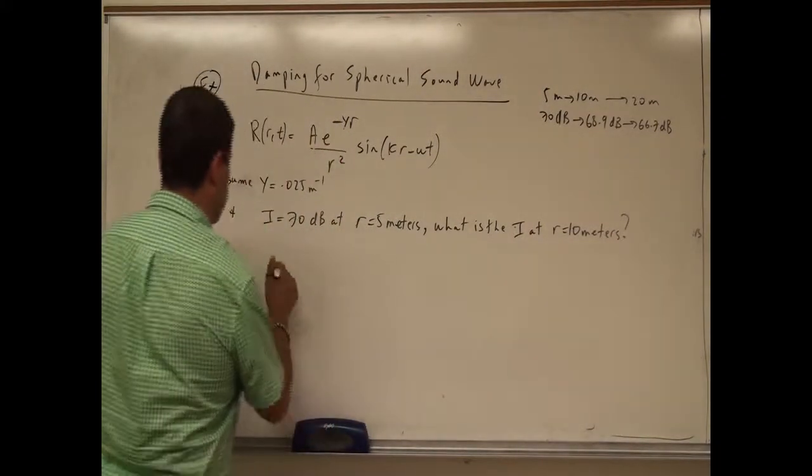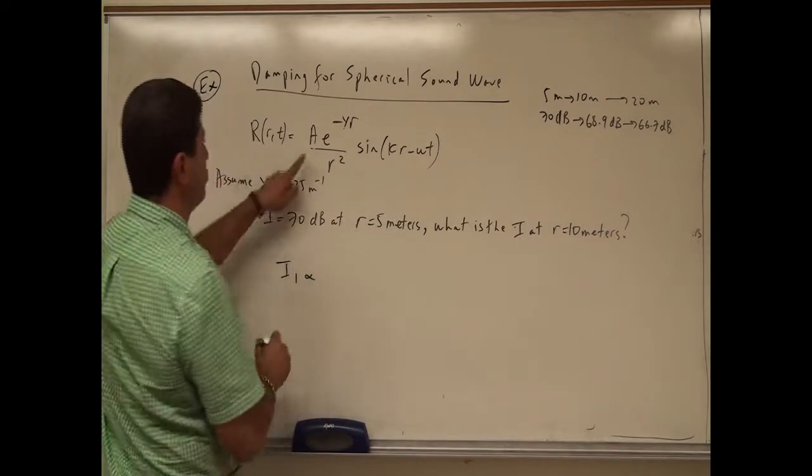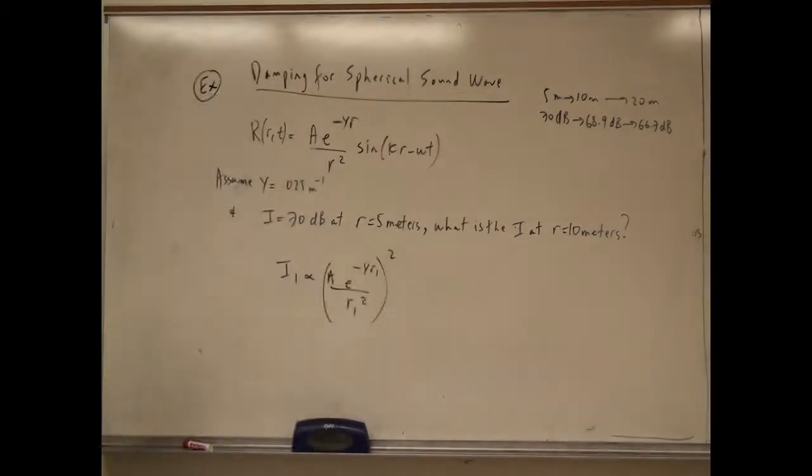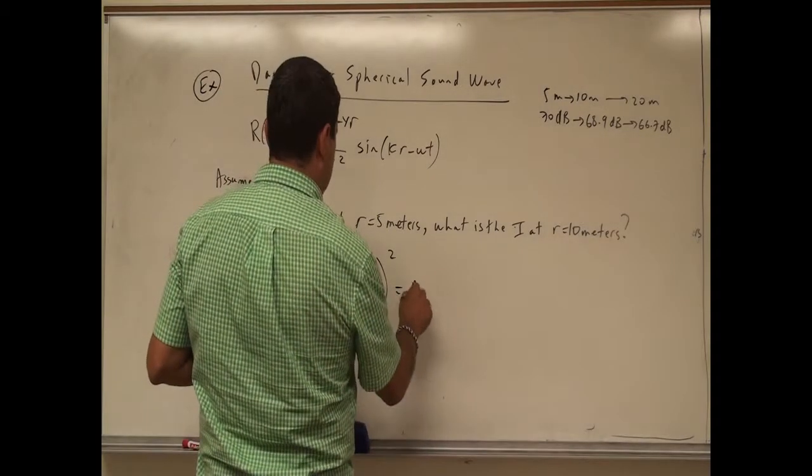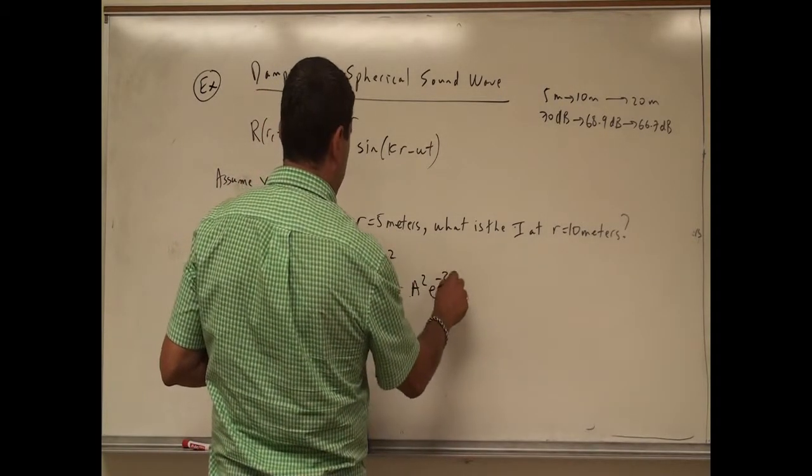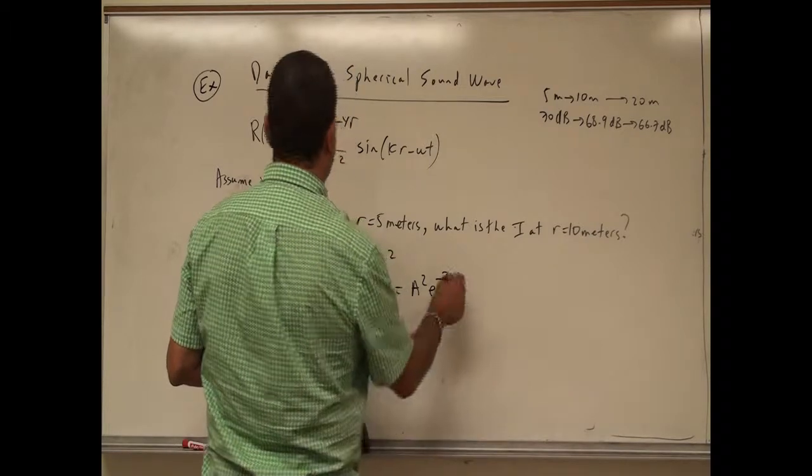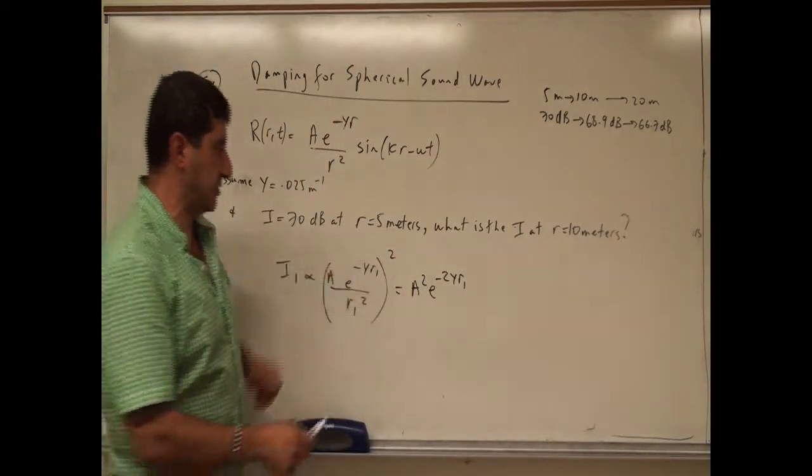So the intensity is going to be proportional to this amplitude squared, so we're going to set it up similarly. So then it's going to be here A squared E to the minus 2 gamma R1, and then R1 in this case is the 5 meters.